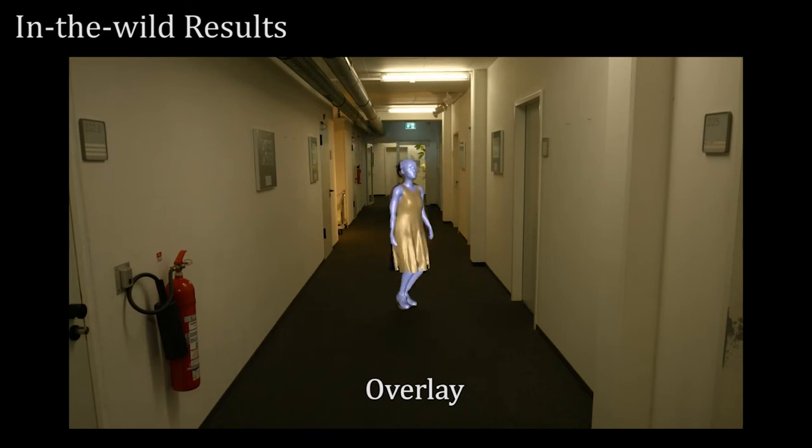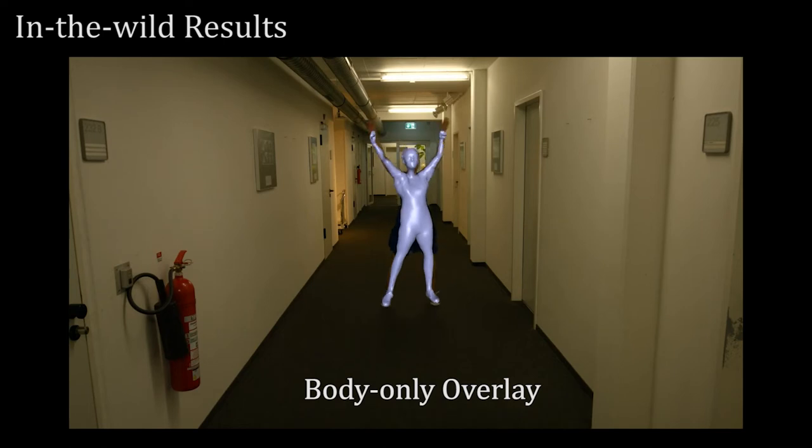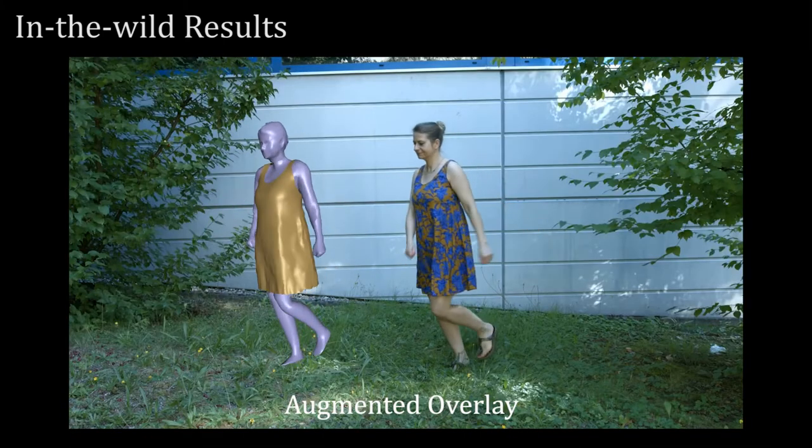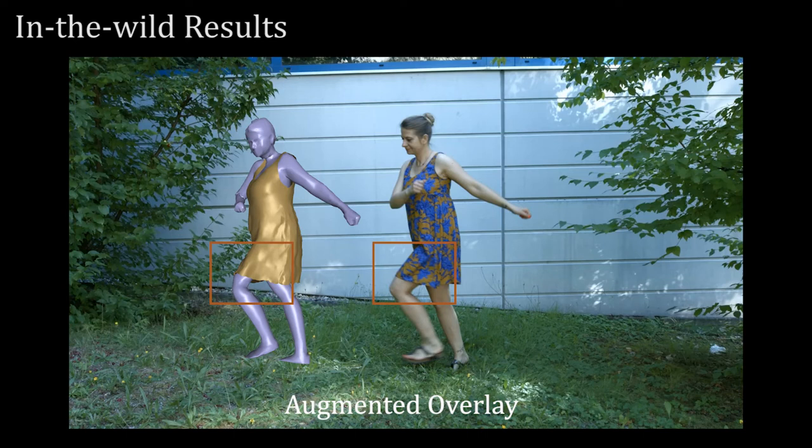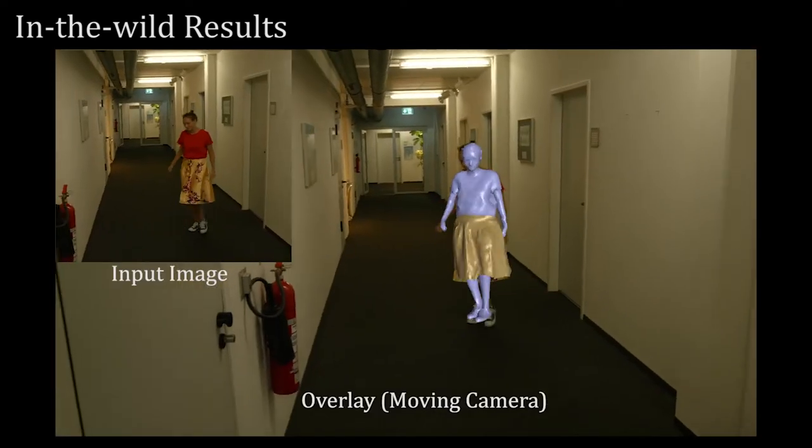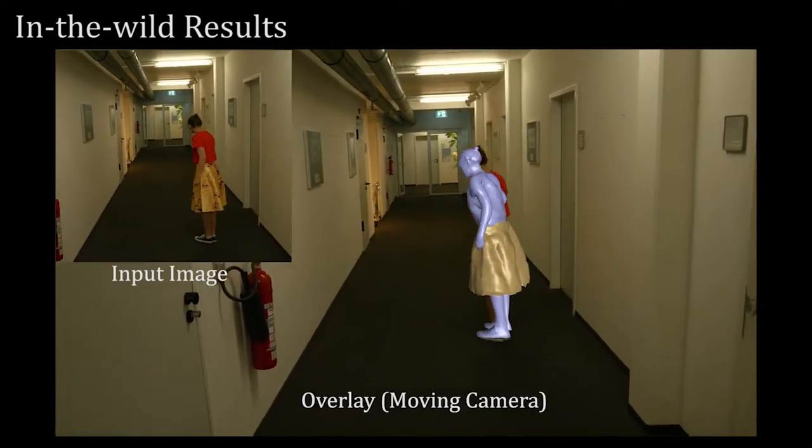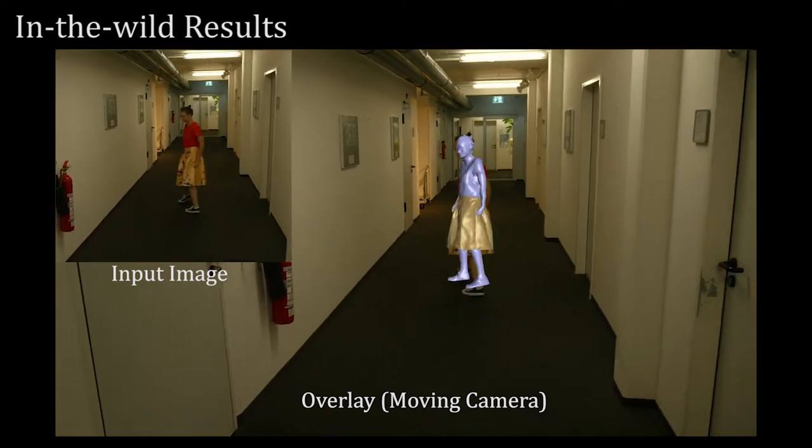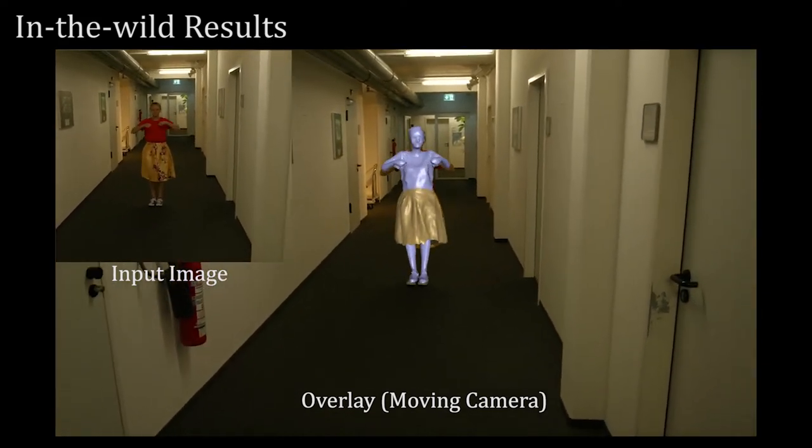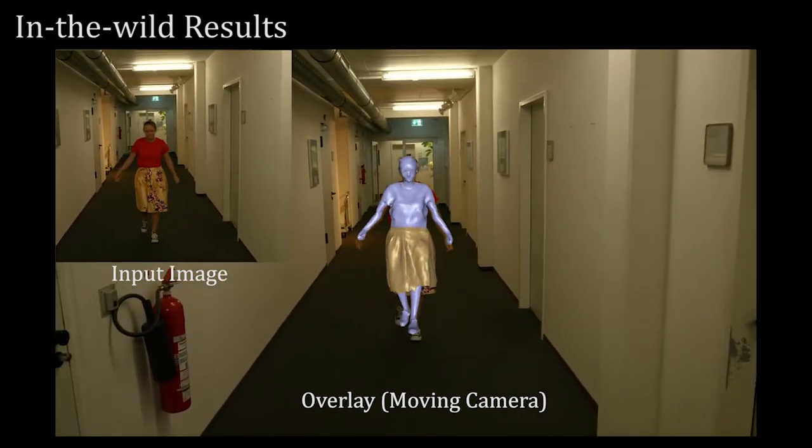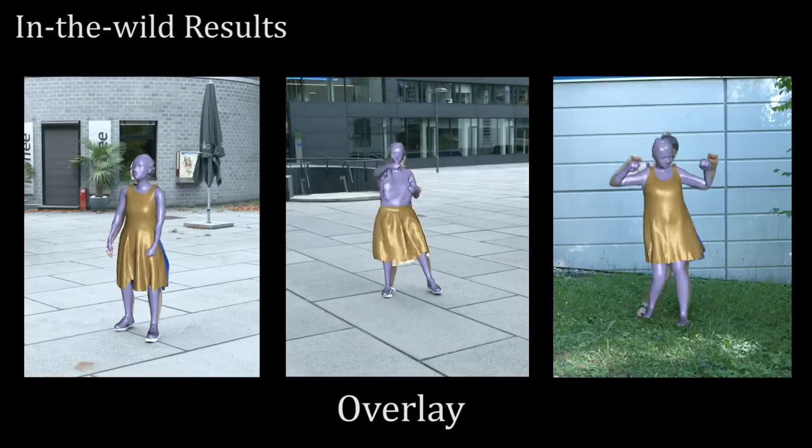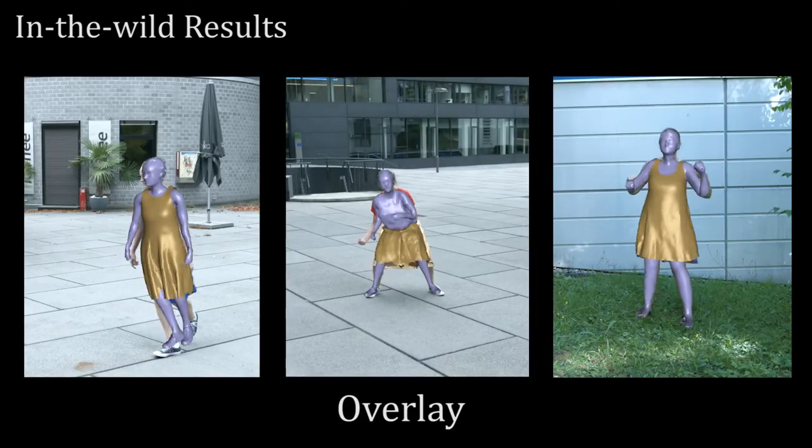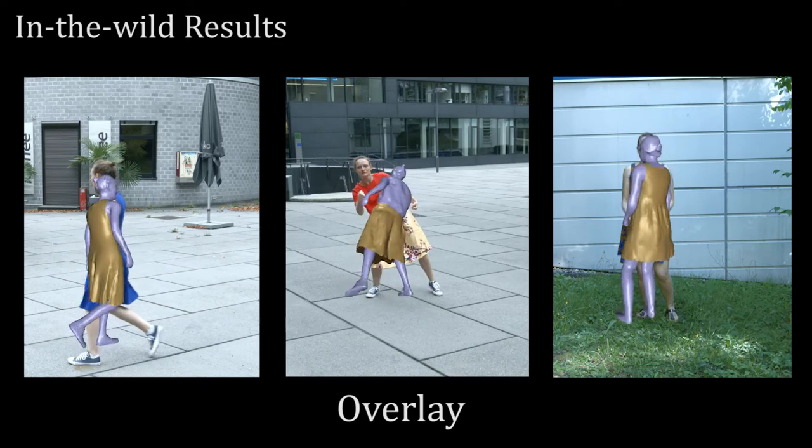We further visualize the underlying body geometry without clothing. We are able to faithfully capture the contact between body and cloth as in the input image. Our method is robust to moving camera settings. Our reconstruction maintains plausible 3D shapes and can be rendered from arbitrary viewpoints.